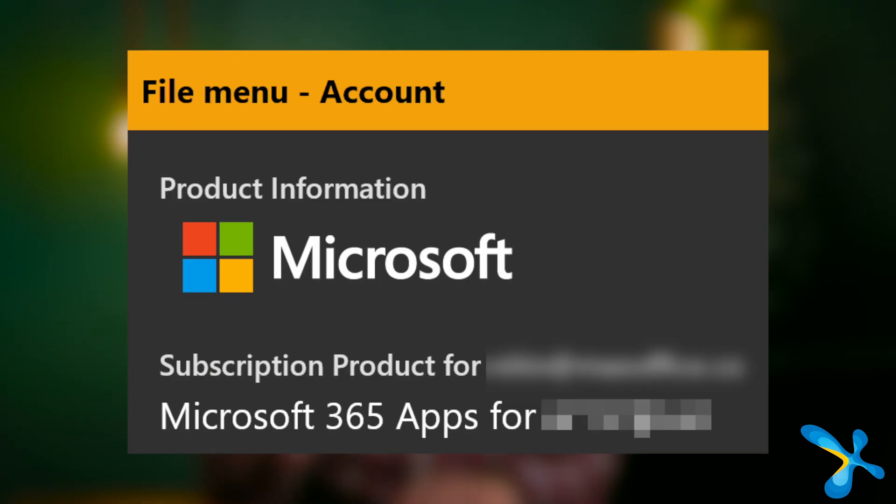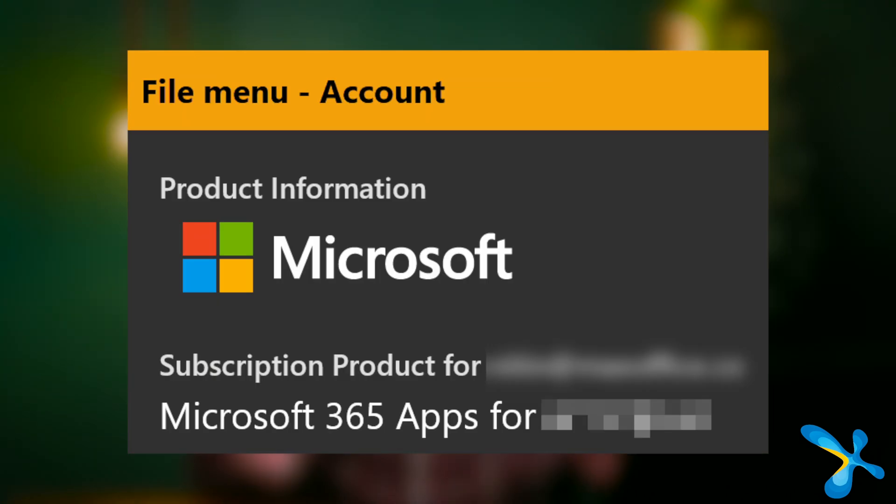The same feature is available on desktop as well, but for that you need the Office 365 version of Excel. That's all there is to add. If there are multiple changes in a given context — for example, for a sheet — it will give you a count of changes and then expand to show all changes.